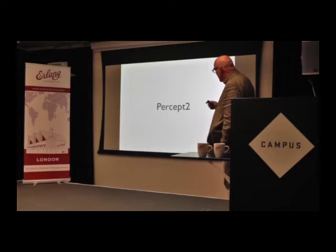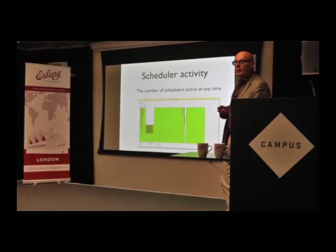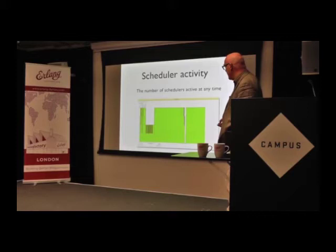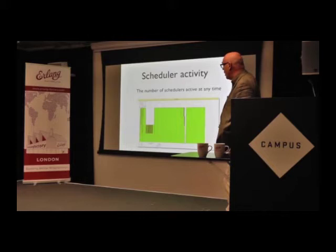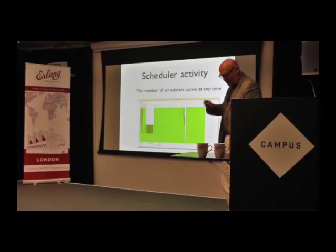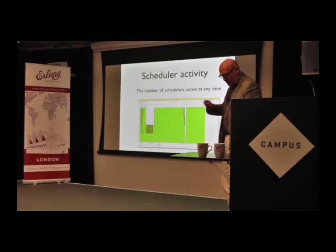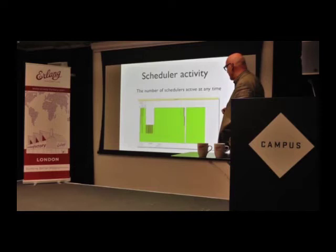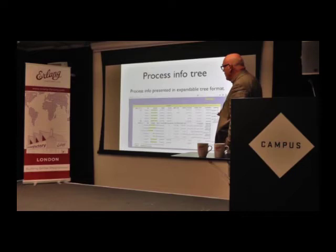Let me show you where we are with Percept 2. We've added information about the number of schedulers that are active at any given time. This graph has a maximum of 4, and you can see in this particular computation you're probably using your schedulers for most of that time, apart from this gap here. You can select a time period and zoom in on it — this proves to be very helpful. You can see something going on: you're not getting full usage of all four schedulers in that particular period.